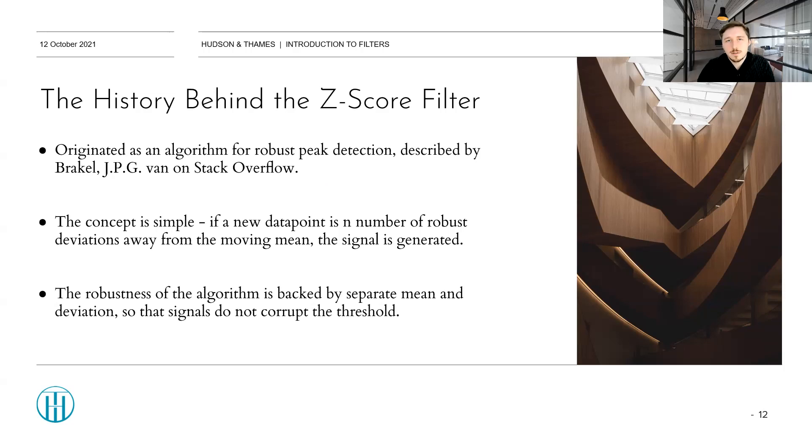And the concept behind this Z-score filter is pretty simple. So if a new data point is n number of robust standard deviations away from a moving mean, the signal will be generated. And one unusual thing that you can see here is that I'm not saying just standard deviations away, but robust standard deviations away. And this is the core idea of the algorithm presented here, is that whenever a signal is detected, its effect on calculating the mean and the standard deviation can be decreased not to corrupt the detection and not to corrupt the threshold and the detection of the next signals, which means if we're seeing an outlier, it may not affect the detection of future signals that much.